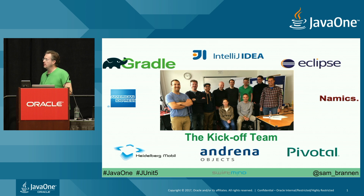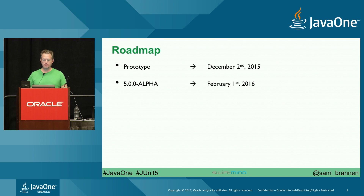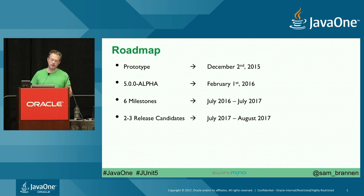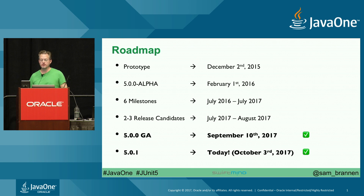That funding helped us have a kickoff meeting with big names in the community — developers from Gradle, IntelliJ, and Eclipse — and we kicked off JUnit 5. We had a prototype released in December 2015, then an alpha a few months later, then a huge step to M1, a couple of milestones over the course of a year, two release candidates, and then 5.0 GA on September 10th, 2017. And as of today, a few hours ago, we released 5.0.1 with a few small bug fixes.